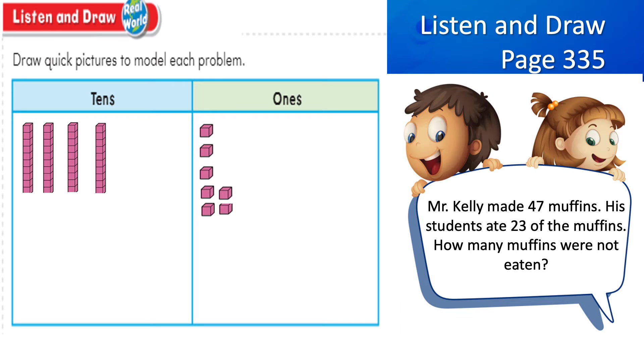Now, I want you to focus on this point that I am about to say. When you are adding, you use and write and show pictures of both numbers. Which means you will show 47 and you will show 23. But in subtraction, we will not, because subtraction is about taking away. So we will only write 47. We will draw quick pictures from 47 and we will try to take away the 23 muffins that were eaten by the children.